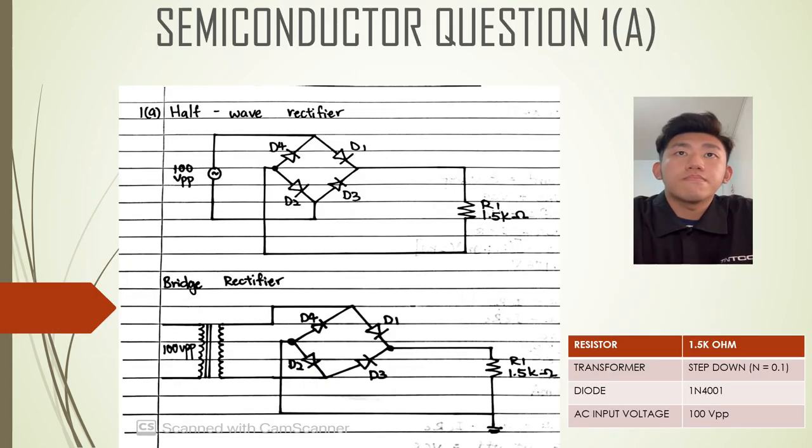This is my first question. One is a half-wave rectifier with 100 VPP and 1.5K resistance. And another one is a bridge rectifier with 100 VPP, 4 diodes, and one resistance with 1.5K.